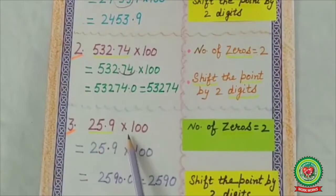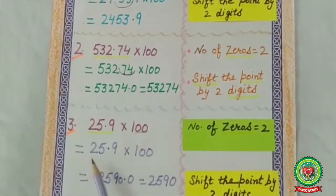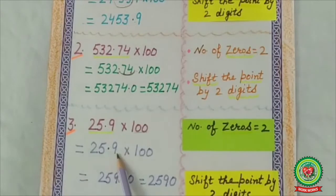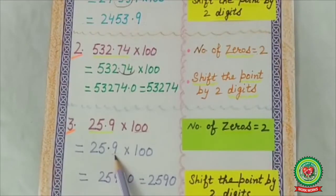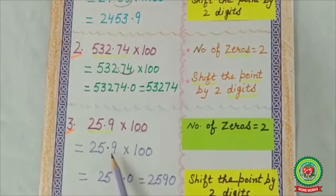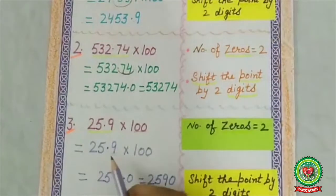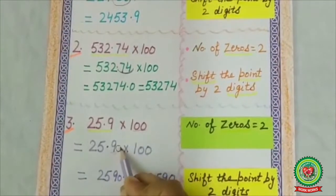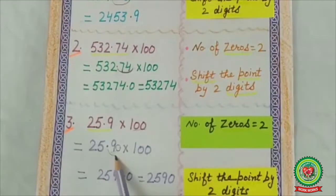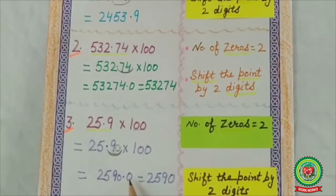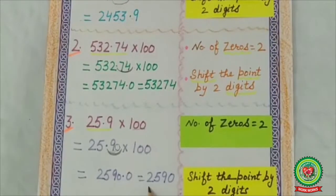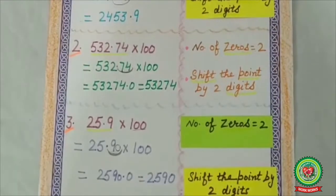Next example: 25.9 multiplied by 100. Number of zeros is 2, so shift the point by 2 digits. There is only 1 digit after the decimal point, which is less than the number of zeros, so we insert a 0 at the end to make it 25.90. Now shift the point 2 digits to the right, and the point comes after 0. The answer is 2590.0, which equals 2590.